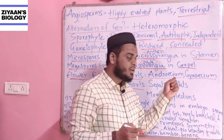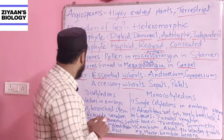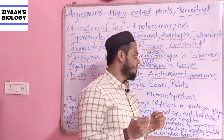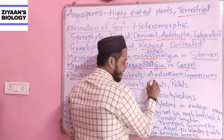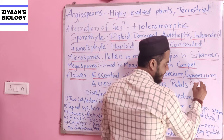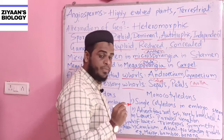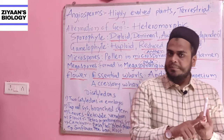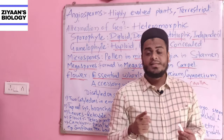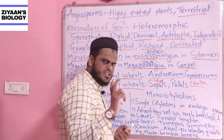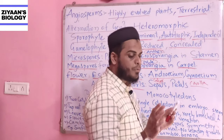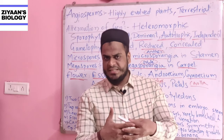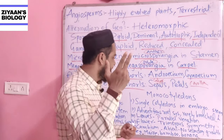The accessory whorls are also of two types: calyx and corolla — or in common language, sepal and petals. Sepal is the calyx and petals is the corolla. Some specialized modified plants do not have proper calyx and corolla; instead they have a diffused calyx and corolla called tepals.